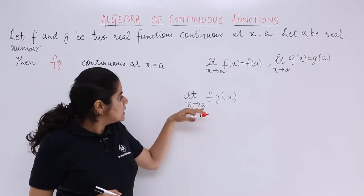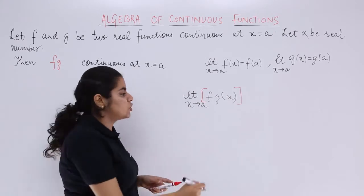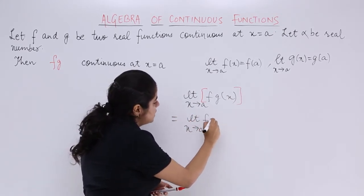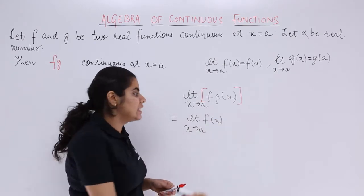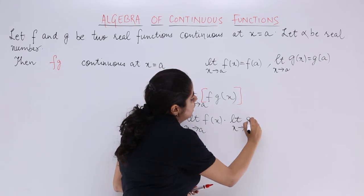When this is the case, you already know that you can always separate the limits. For separation of limits, it will become limit x tends to a f(x) and similarly limit x tends to a g(x). This is clear.